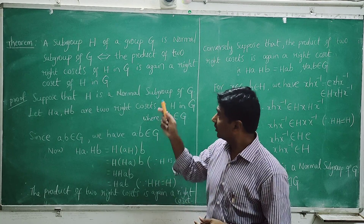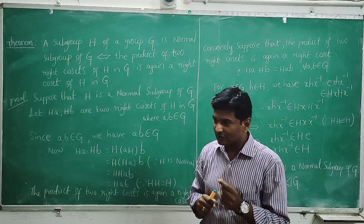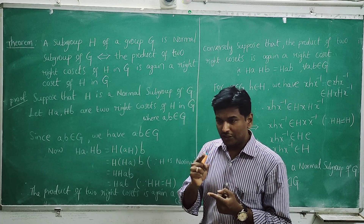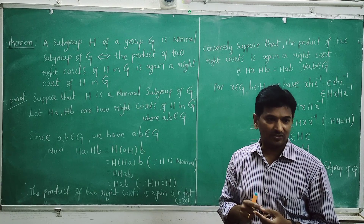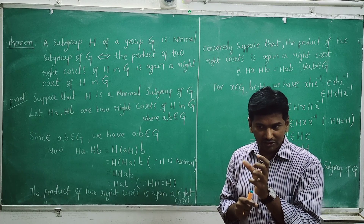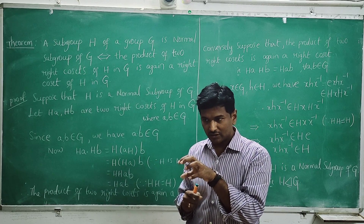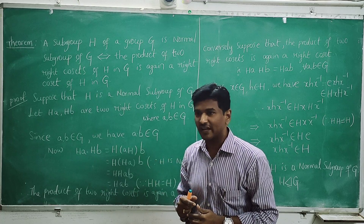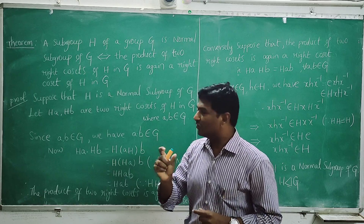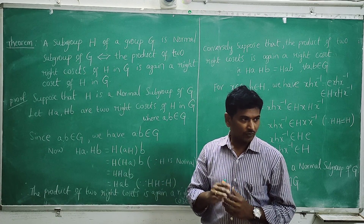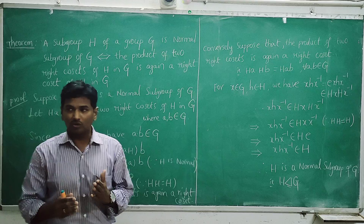We observe that on the left hand side the statement is: any subgroup H of the group G, H is a normal subgroup of G. On the right hand side the statement is: the product of two right cosets is again a right coset.